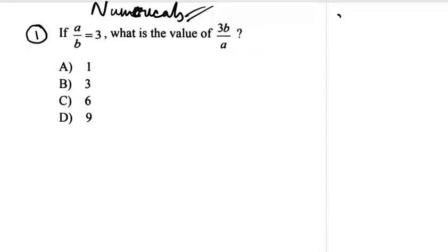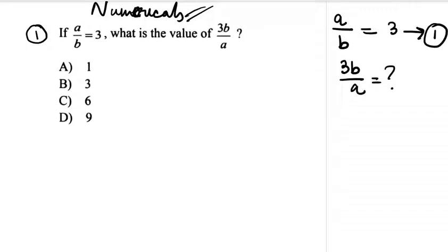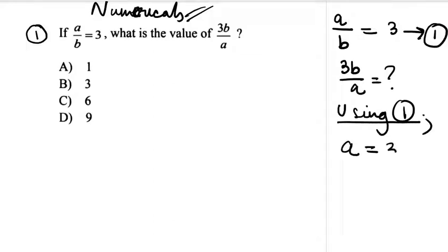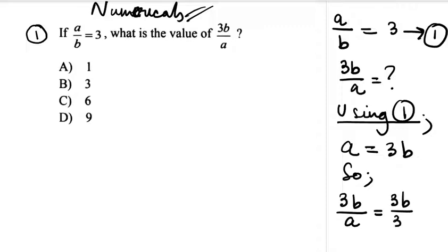It says a divided by b is equal to 3. We need to find the value of 3b by a. Using equation 1, we get a is equal to 3b. So 3b divided by a is actually equal to 3b divided by 3b. If you cancel them out, it is equal to 1. So the first option is the right option.